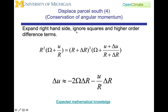We're going to expand the right-hand side and ignore the squares and the higher order terms. If this does not make sense to you, then you need to go back and review the expected mathematical knowledge in the course. We're going to end up with delta u — a change in velocity — approximately equal to minus two omega delta r minus u over r delta r. So we have related u to the change in the radius of rotation around the axis in such a way that this equation remains true.